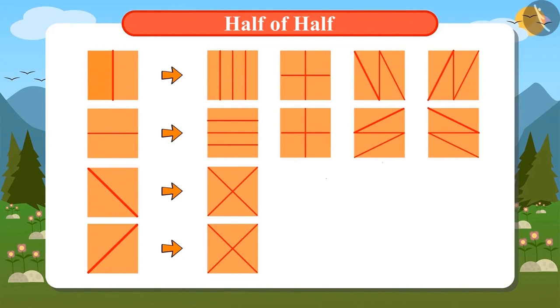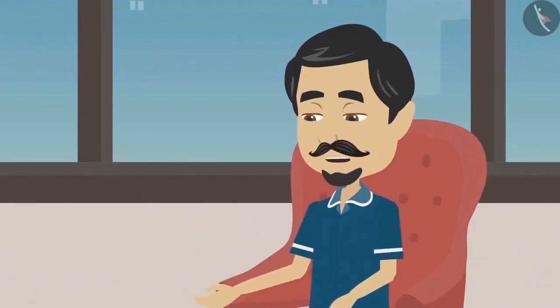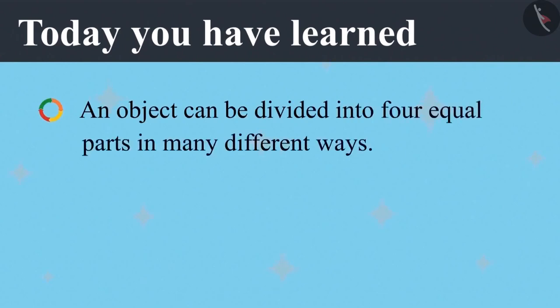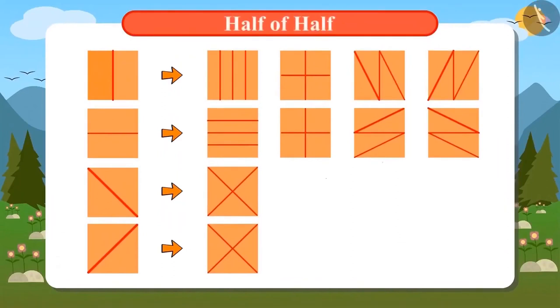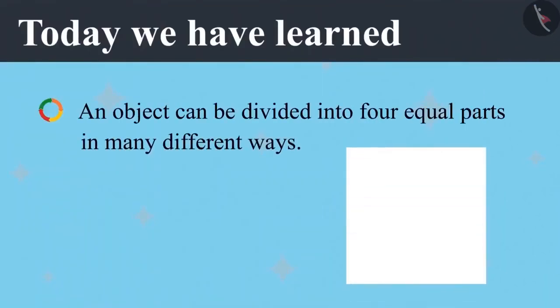Which among these looks good to you? I like this one the best, and I like this one because it is so simple. We will divide the field whichever way you like. Today you have learned an object can be divided into four equal parts in many different ways. You can also take a square-shaped paper and observe the number of ways you can find to divide it into four equal parts.